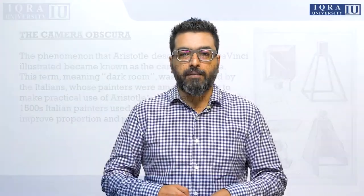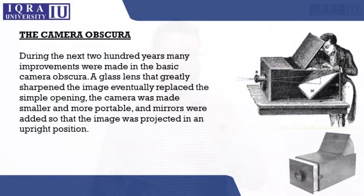Further development of the camera obscura involved fitting a glass lens, which helped position the projected image more precisely on a surface. Efforts were being made to find a way to make the projected image permanent.